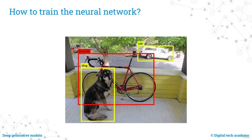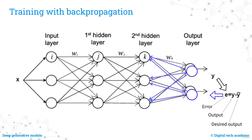We understand that an object detection algorithm can be represented as a mathematical function approximated by a neural network, and that an artificial neuron is a fundamental building block. The remaining question is: how do we get the neural network to perform a specific task? The answer is through learning from data. We provide the neural network with input data — images — and corresponding desired output — the object detections — and the network learns to map inputs to outputs. This process is known as training the neural network.